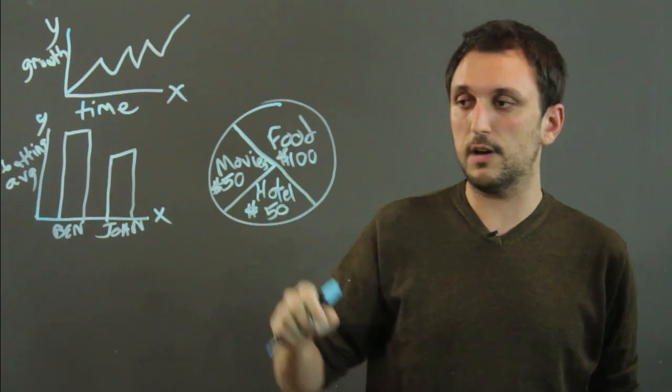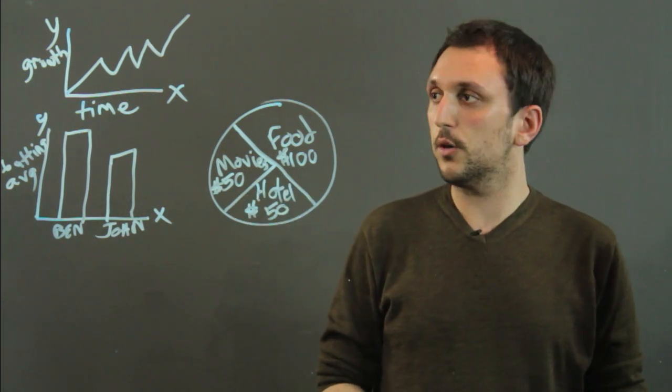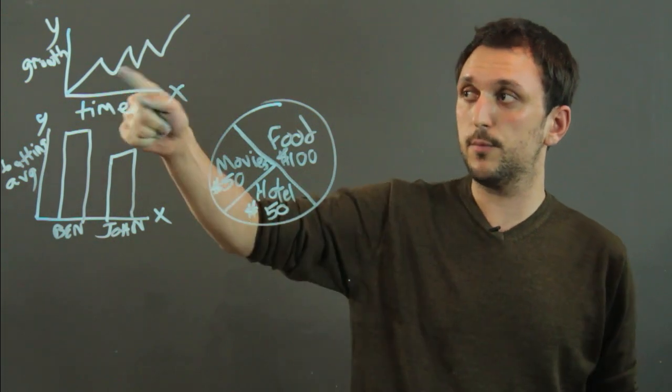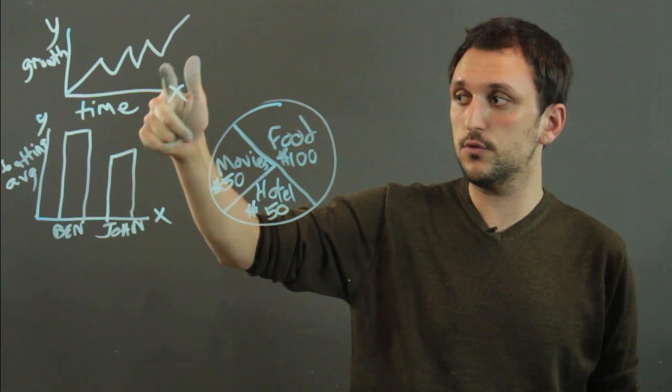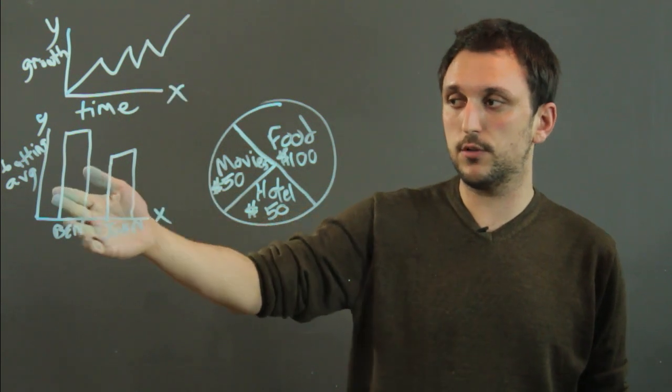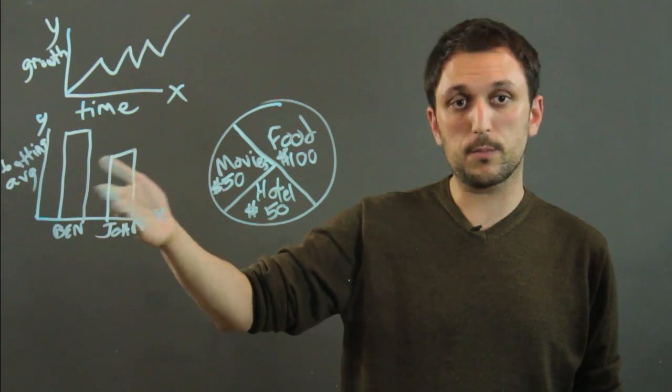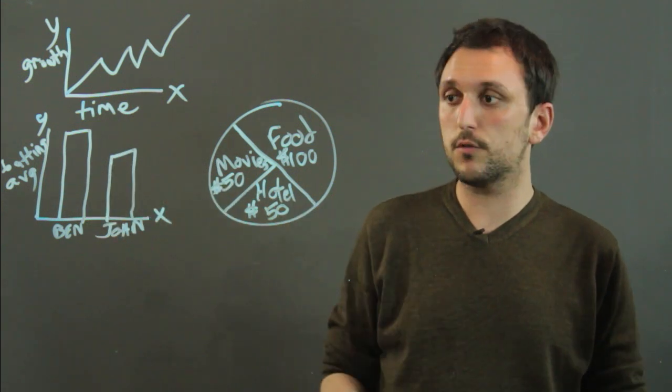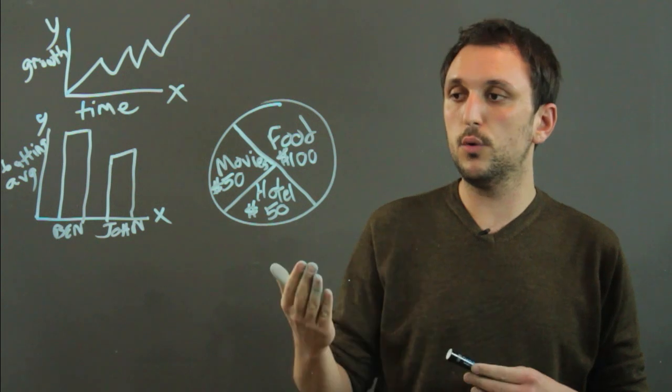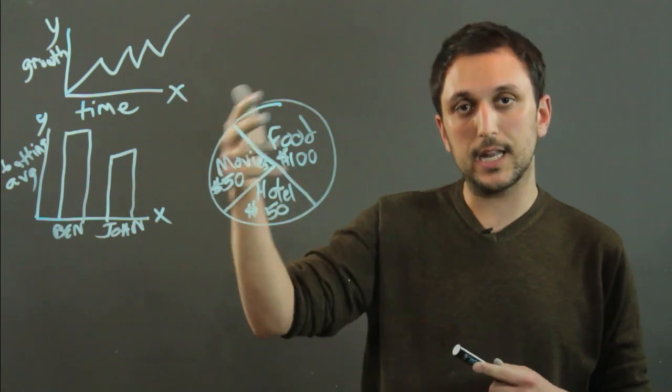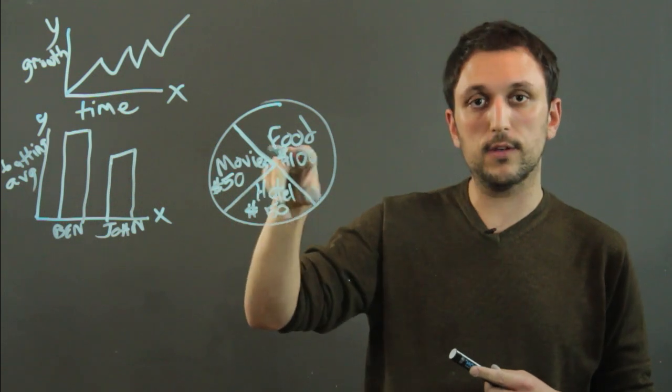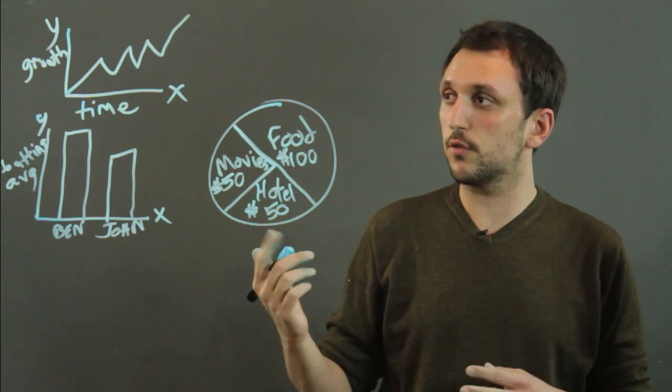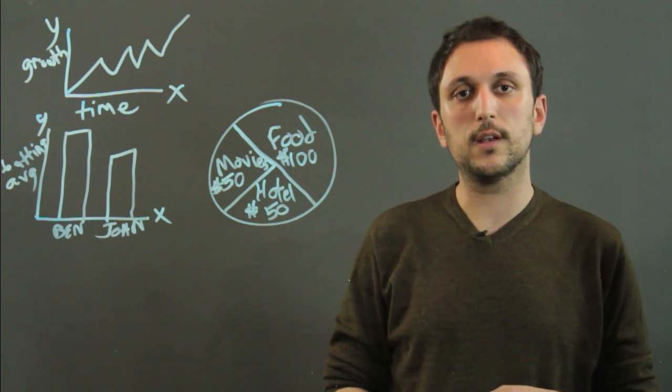So to go back over, a line graph is best used for plotting change, a bar graph is best used to track separate performance, and a circle graph is best used to represent a finite amount of data and how it divvies up. So I'm Charlie Kasov and you just learned how these different graphs are used to represent data. Thanks a lot.